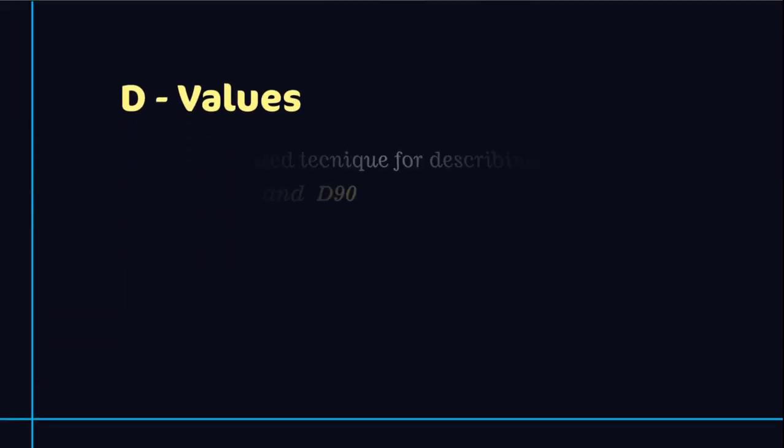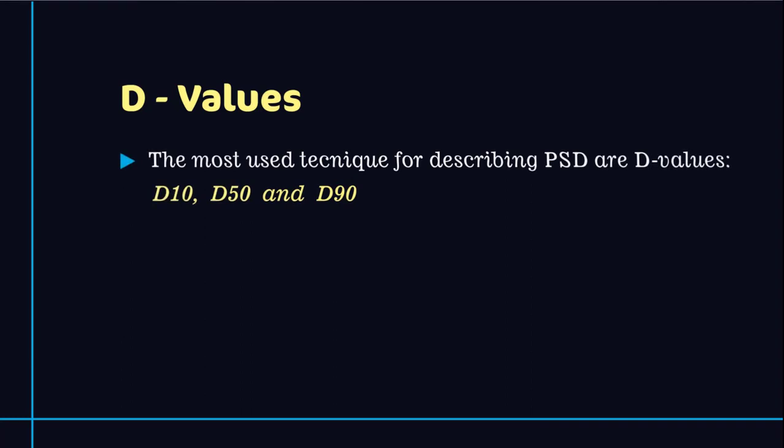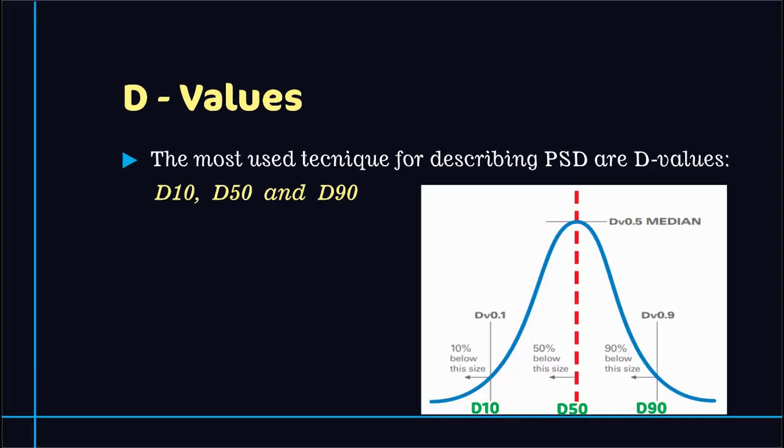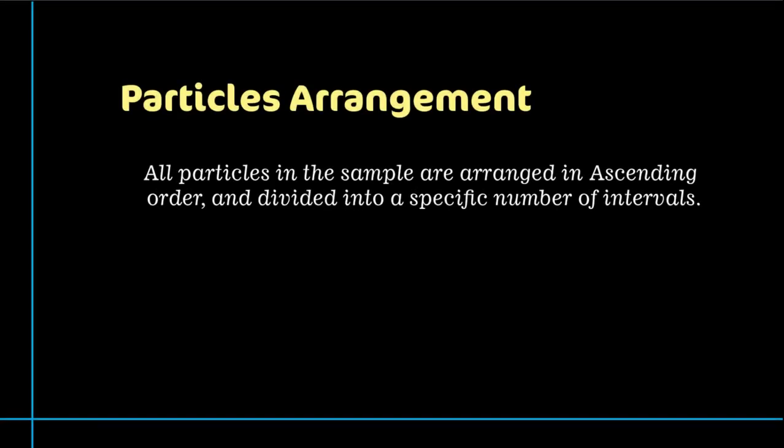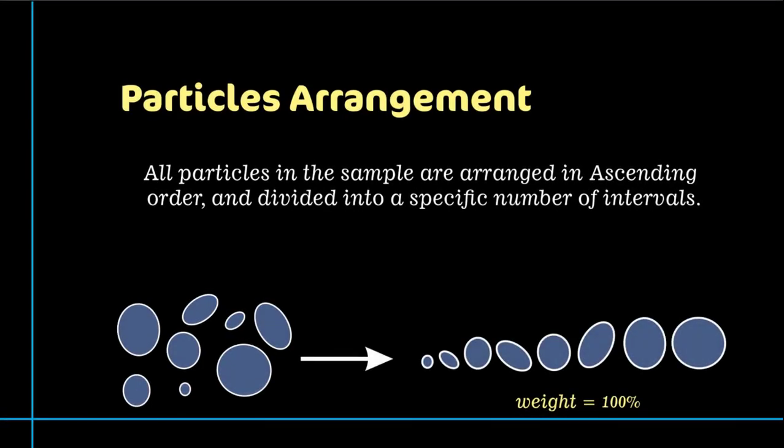The D10, D50 and D90 percentiles are the most used techniques for performing this kind of calculation. The particles are first of all arranged in an ascending order, then they are divided into a specific number of intervals.